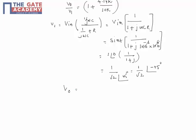So v_0 equals v1 times this. v1 is 1 by root 2 at an angle of minus 45 degrees, times 1 plus 4.14 by 10, which is 0.414. So this equals 1 by root 2 at an angle of minus 45 degrees.